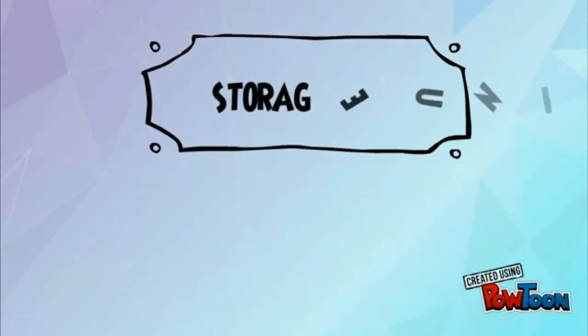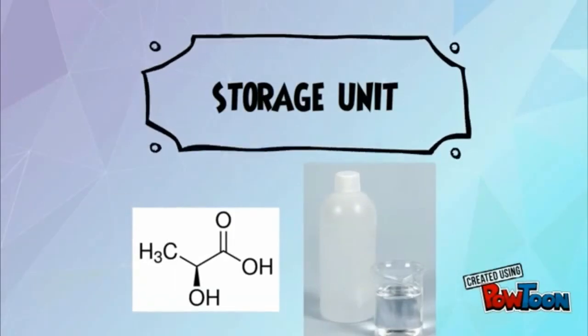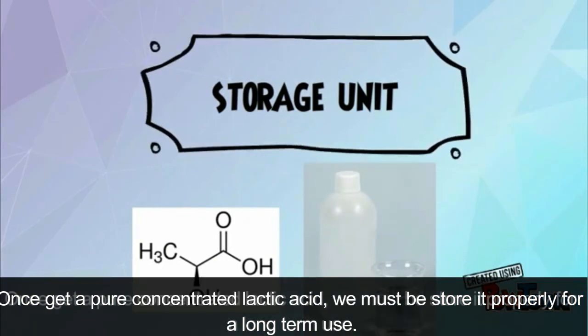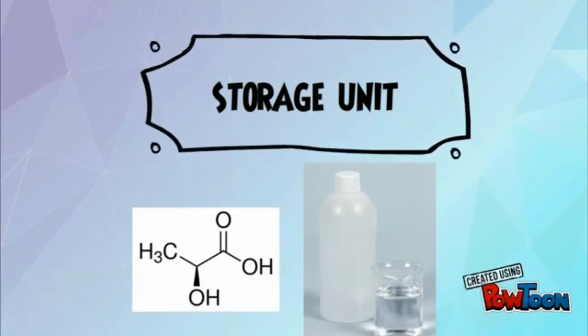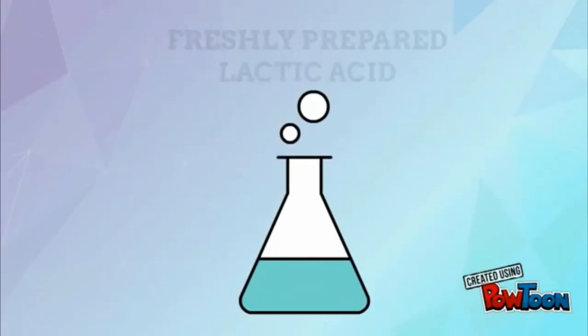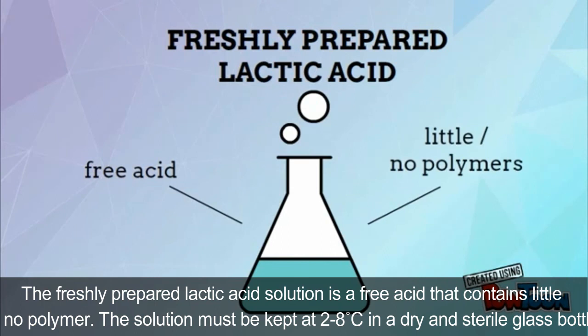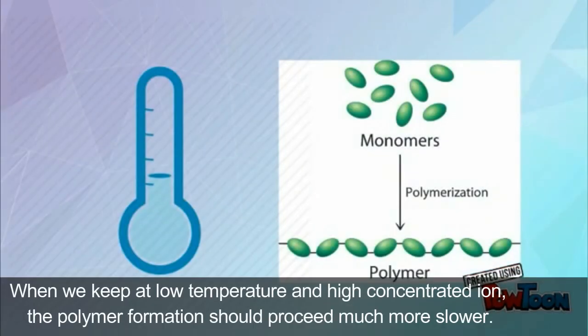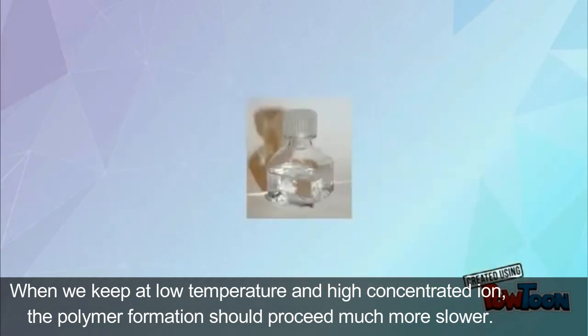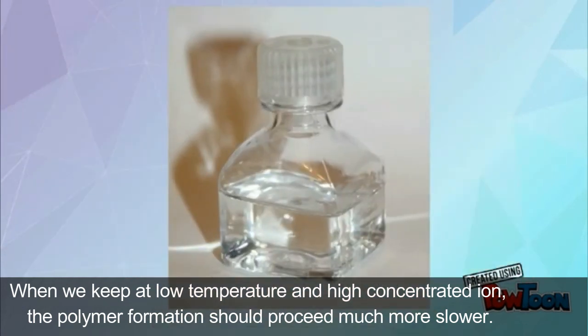The storage unit: once we get pure concentrated lactic acid, we must store it properly for long term use. The freshly prepared lactic acid solution is a free acid that contains little or no polymer. The solution must be kept at 2 to 8 degrees Celsius in a dry and sterile glass bottle. When we keep at low temperature and high concentration, the polymer formation should proceed much more slowly.